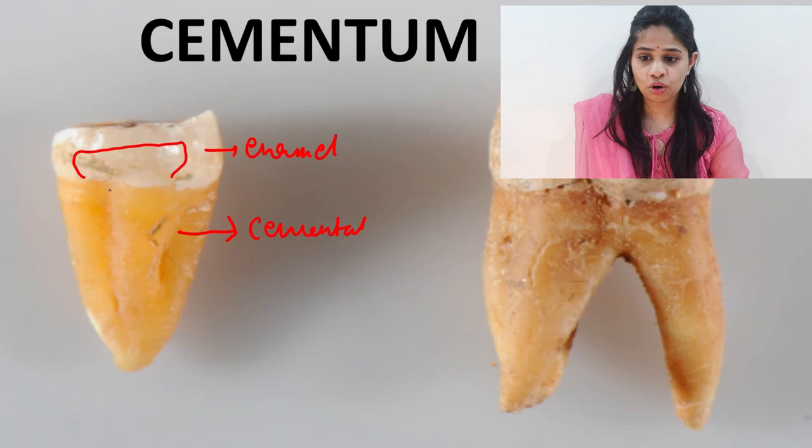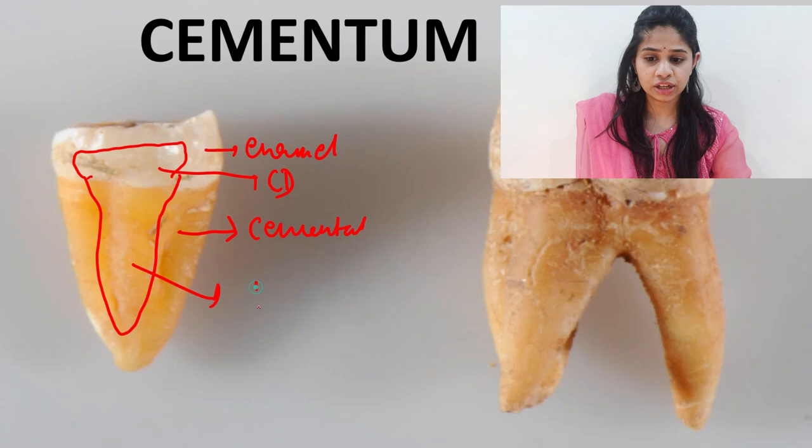So this would be our coronal dentine, and inside the cementum we have a layer of radicular dentine. Apart from that we have the alveolar bone surrounding the tooth. The hard tissues are the enamel, the cementum, the dentine.